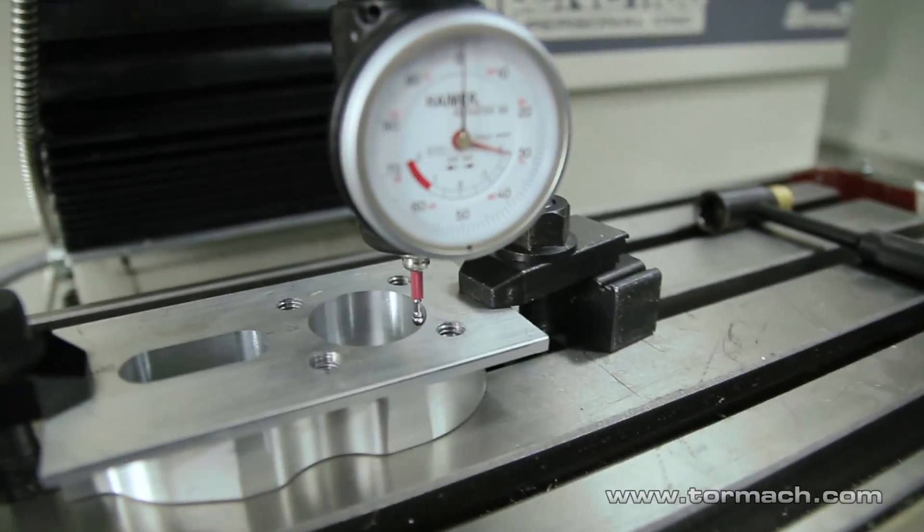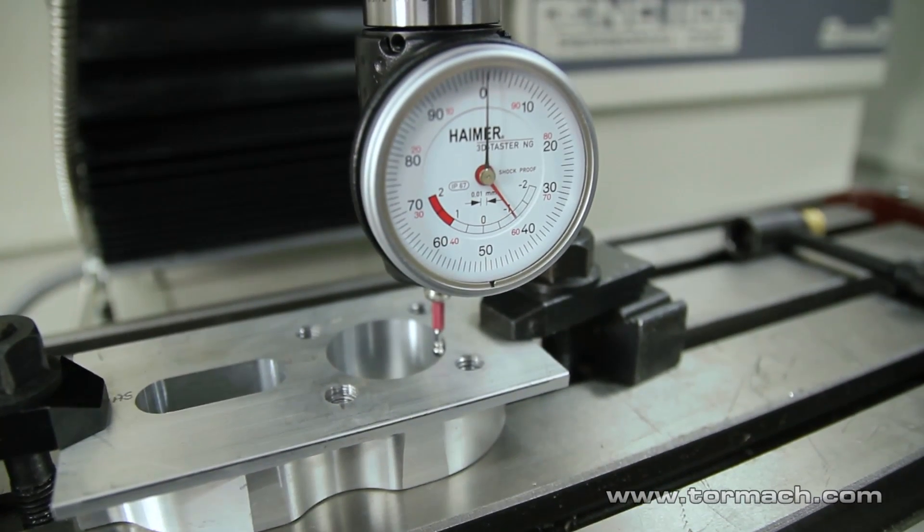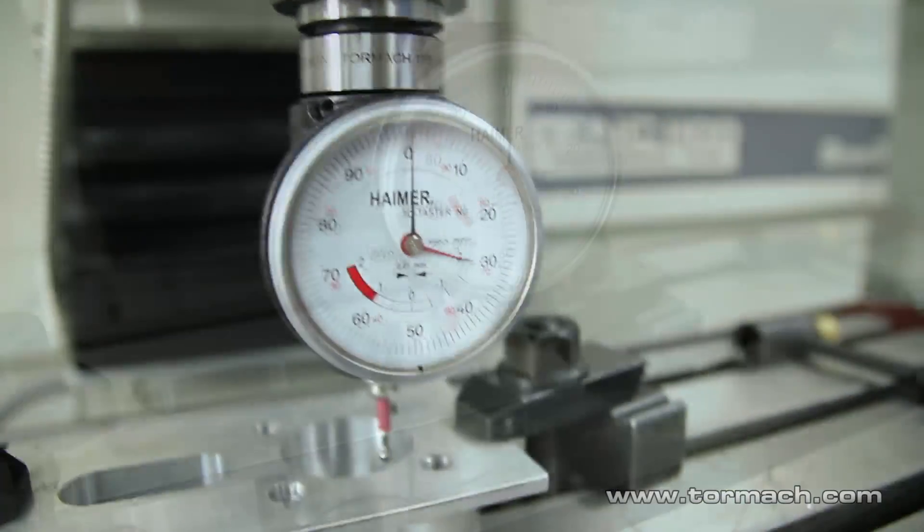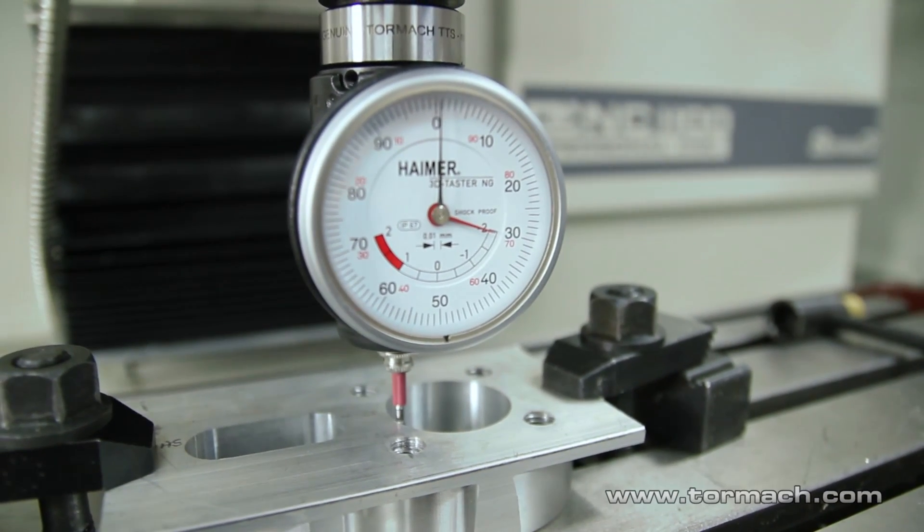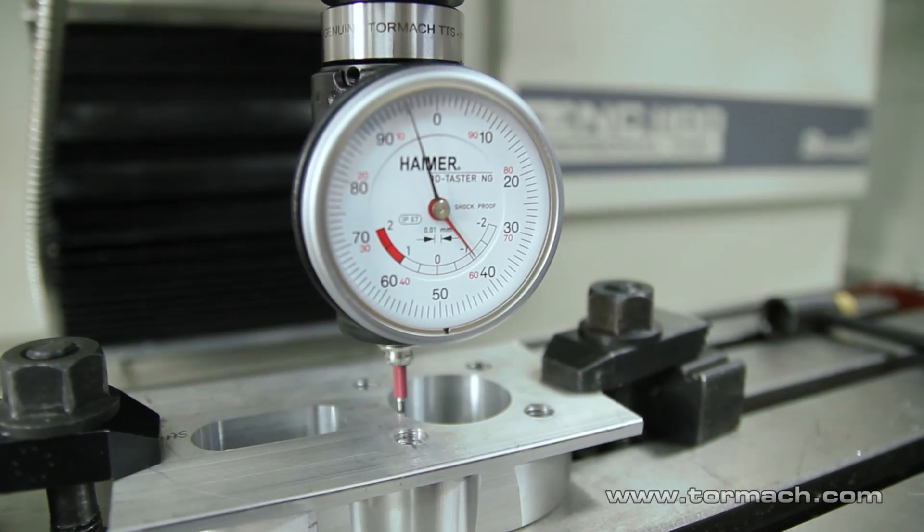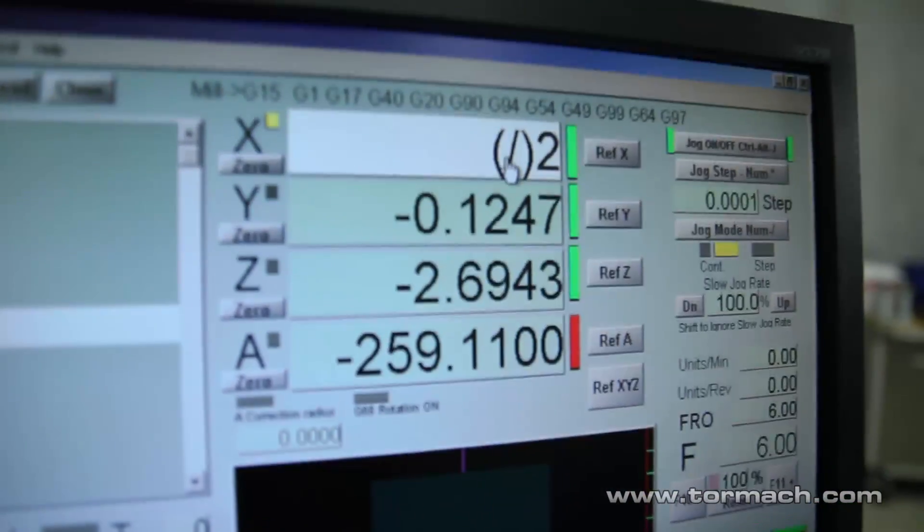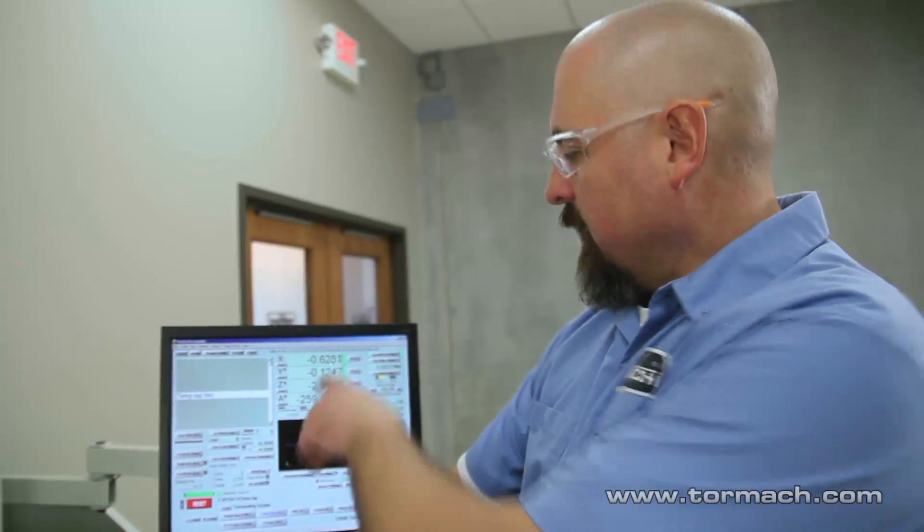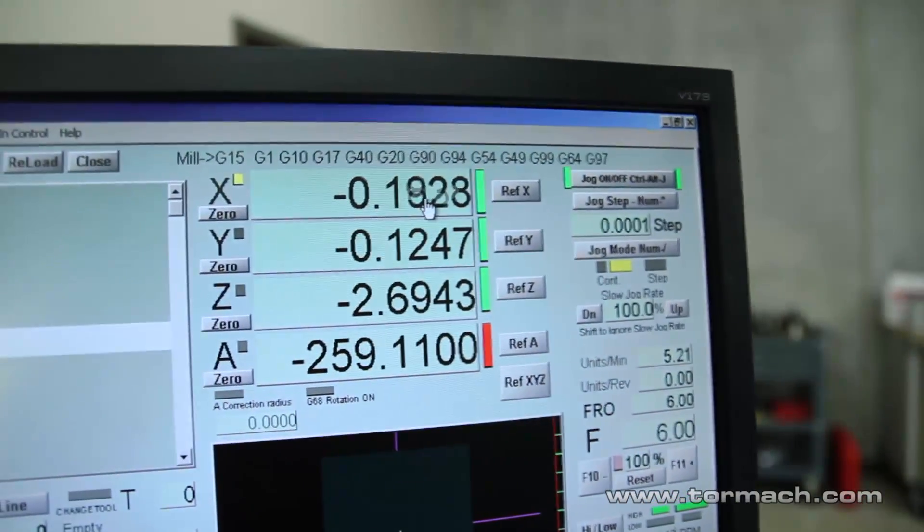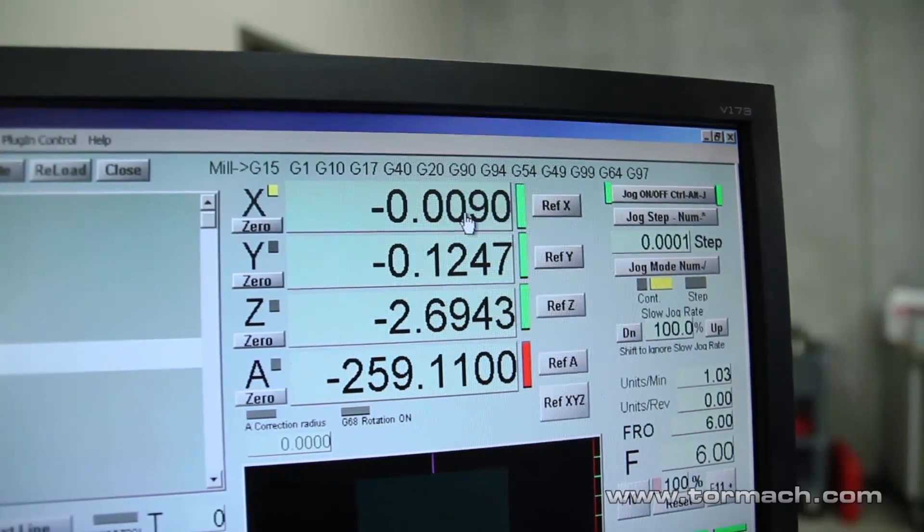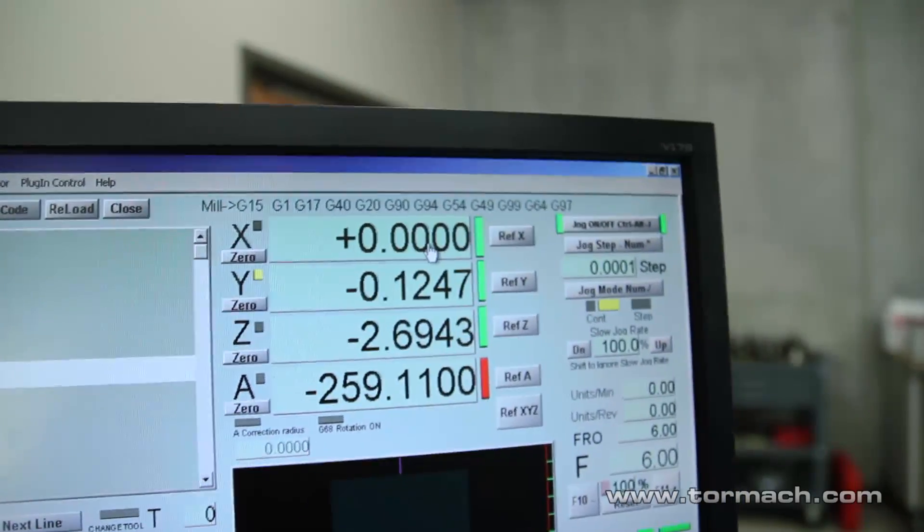So just do whatever axis you pick to do first. Do it first. And then do it again after you find the other axis. Zero. Now you can divide that by two. Now I'll jog to the DRO read zero. And then I'll do the Y axis.